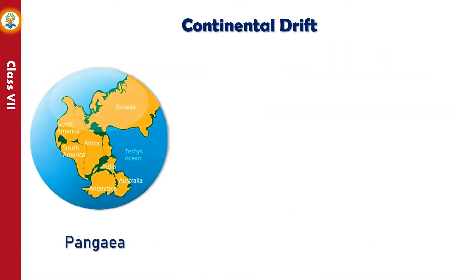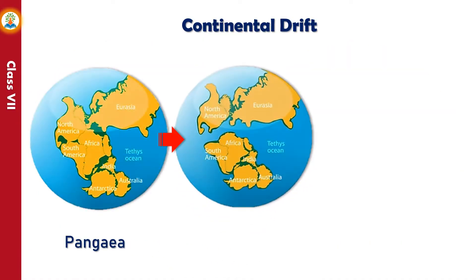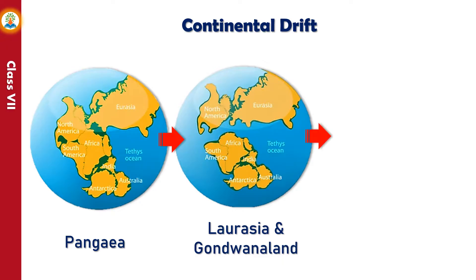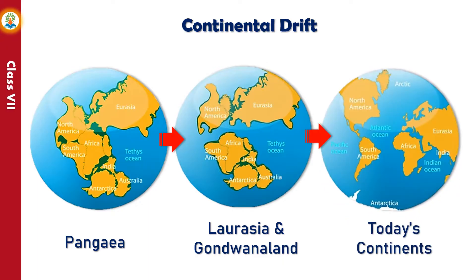The theory says that initially two massive continents, Laurasia and Gondwana Land, were formed, eventually fragmenting further to form today's continents.